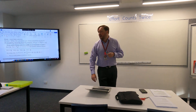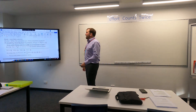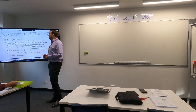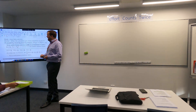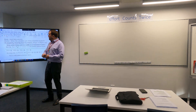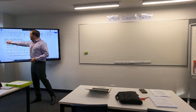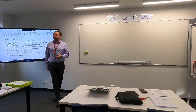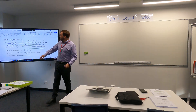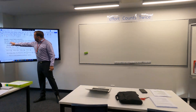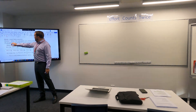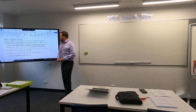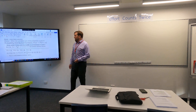Mode and median. I know mode and median are things we most commonly associate with stats, but they have a meaning in probability as well. The mode is the most likely outcome. The median is when the cumulative sum of the probabilities equals 0.5.